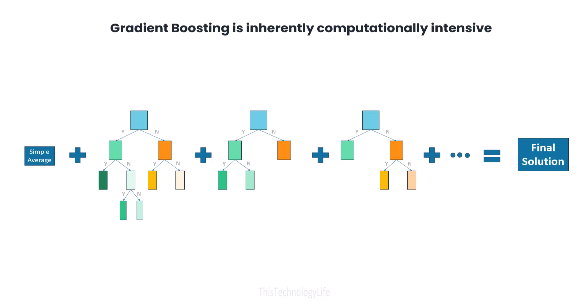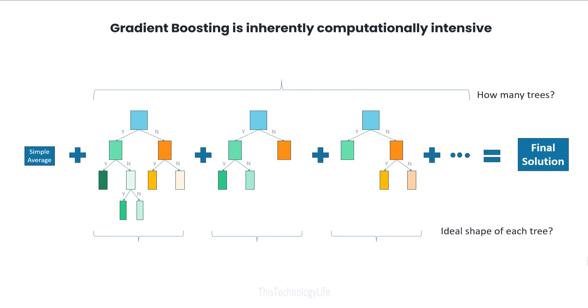Gradient Boosting uses a series of weak learners such as decision trees, which you can visualize as a series of if-else or yes-no paths. Figuring out how many and how each of the decision trees can be optimally constructed is inherently very computationally intensive.